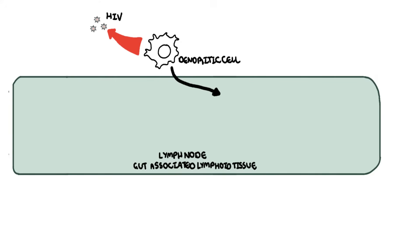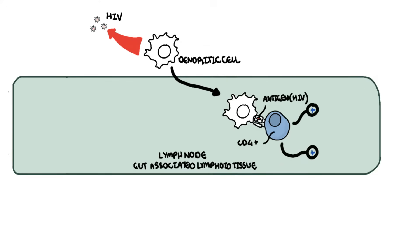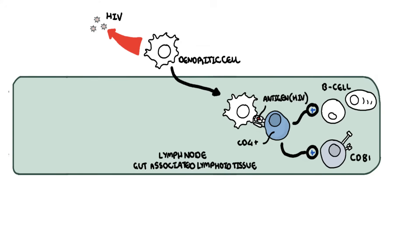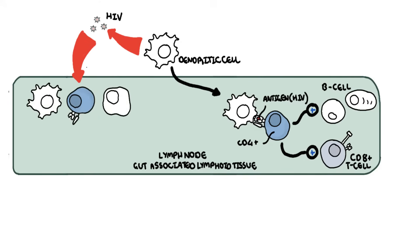The dendritic cells then travel to the lymph nodes and the GALT — gastric associated lymphoid tissue — carrying this viral particle, where they activate or stimulate CD4 T lymphocytes. The CD4 T cell will then activate B cells and plasma cells to produce antibodies against HIV, and will also activate CD8 T cells, also known as cytotoxic T cells. During this time, HIV continues to infect cells. The only cells that can be infected by HIV are those with the CD4 receptor: monocytes, macrophages, dendritic cells, microglial cells, and more specifically the T lymphocytes.